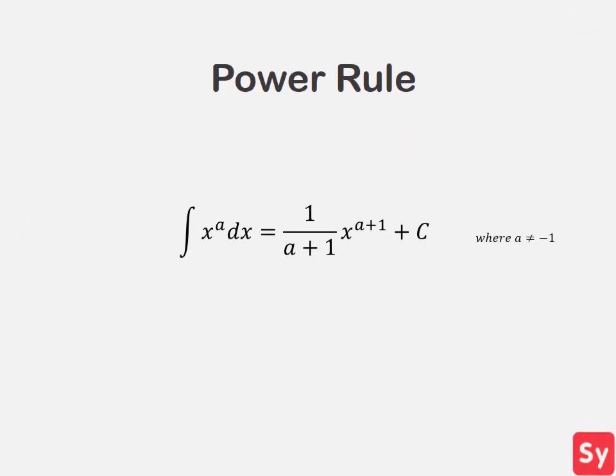Here we have the power rule. It states the integral of x to the power of a with respect to x is equal to 1 over the exponent plus 1 times x to the exponent plus 1 plus c, where a does not equal negative 1.